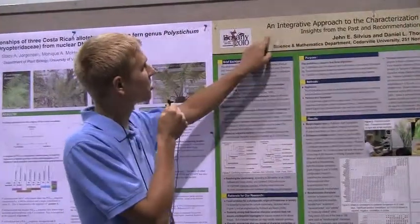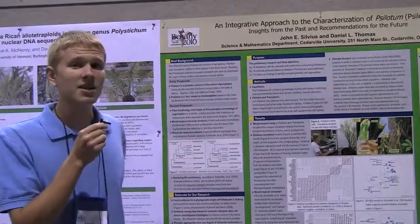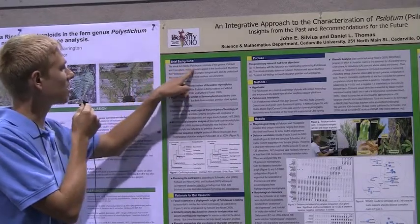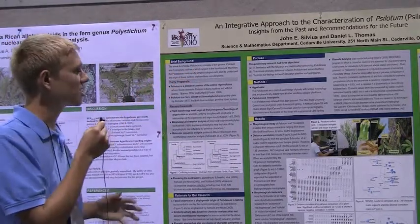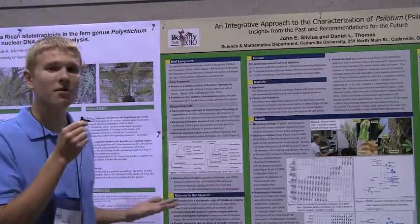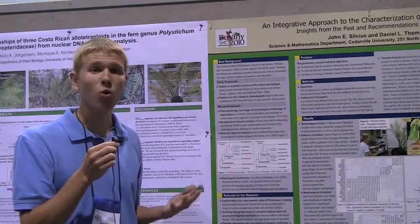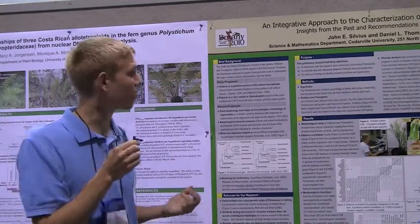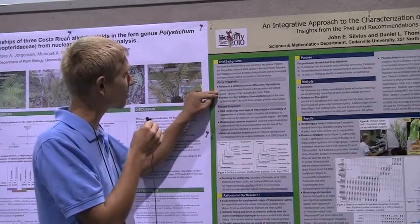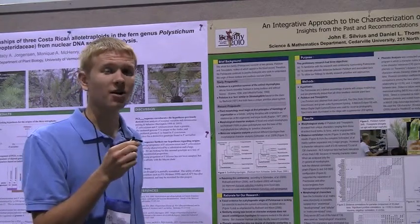The topic of our poster was an integrative approach to characterization of Psilotum. We looked at this plant called Psilotum — it's the whisk fern in the Psilotaceae, which consists of Psilotum and Tmesipteris. Neither of them appear in the fossil record, so a lot of debate among botanists has gone into the origin of these plants. One of the earlier proposals was that Psilotum is a primitive survivor of a plant called Rhyniophytes, which has shown up a lot in the fossil record.